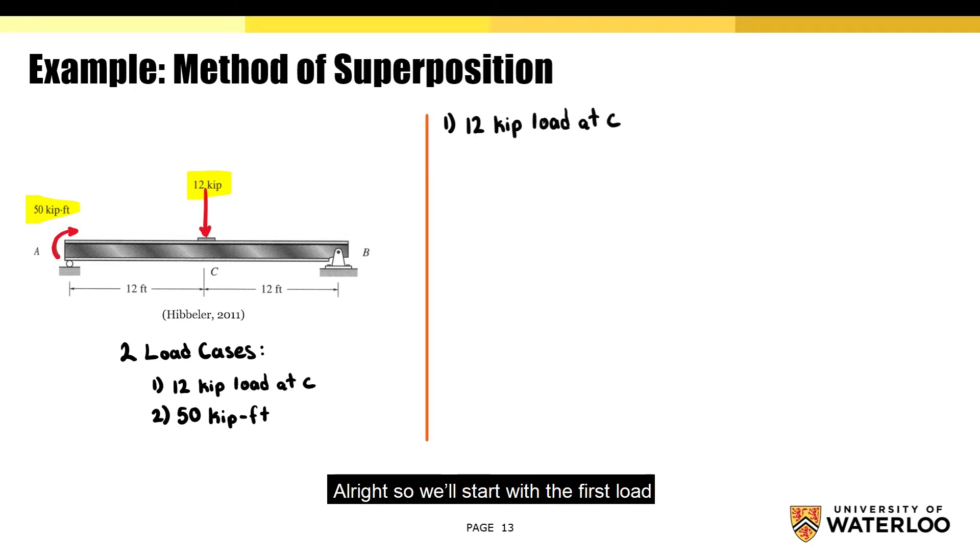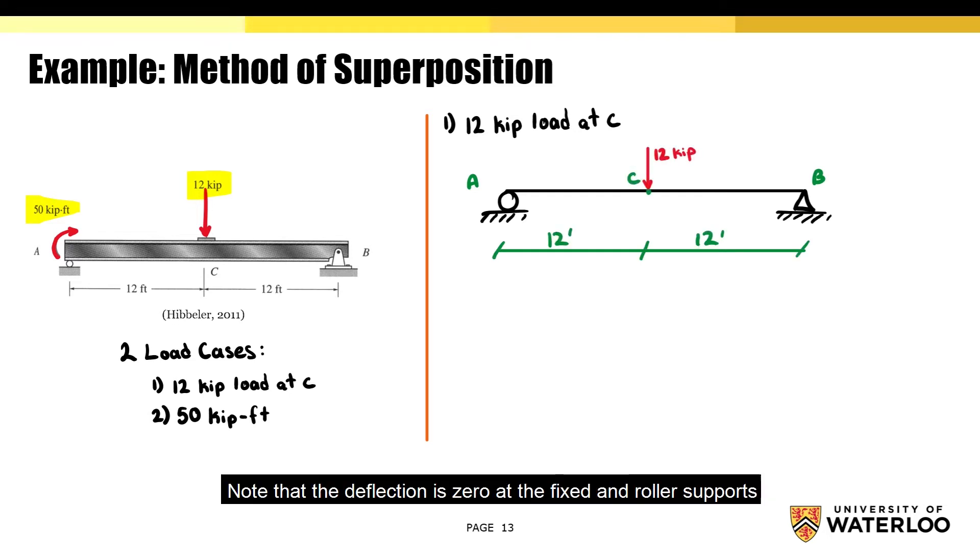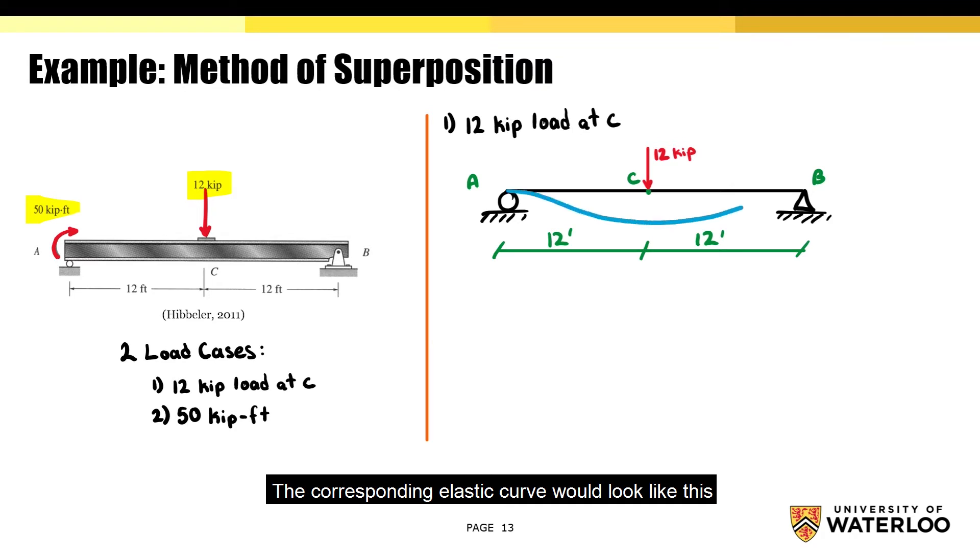Alright, so we'll start with the first load, and here is the corresponding free body diagram. Before we draw the elastic curve, note that the deflection is zero at the fixed and roller supports. So if we apply the point load at point C, the corresponding elastic curve will look like this. As per the question, we're solving for the vertical deflection at C, so the deflection for this component was labeled as VC1.